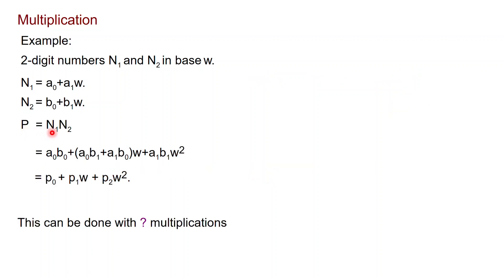We want to compute P which is N1 times N2. And if you write down what happens here, you get this. You get A0 times B0 from multiplying these two things. Then you have an A1 B1 W squared from multiplying these two things. And then you have the cross products here, which is A0 B1 here and A1 B0 here. They multiply W.